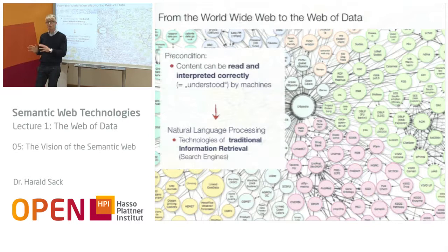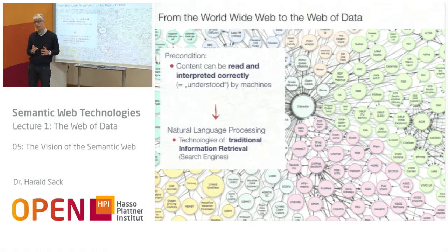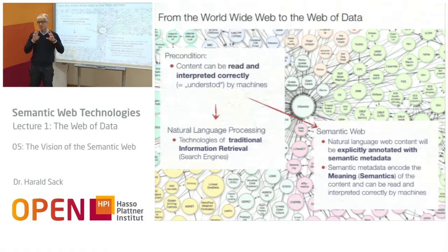Originally, the way to deduce the meaning of information was done by natural language processing. Of course, it's still done today — for example, in the huge search engines like Google, Bing, or others — where natural language processing technologies try to extract the meaning of information. But think about what would be possible if the meaning of information would not be extracted from the implicit information within natural language, which is a rather error-prone process.